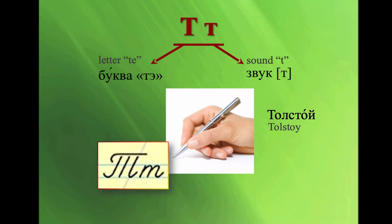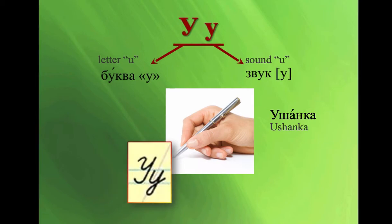Т. Т. Толстой. The author of Anna Karenina, War and Peace. У, У, Ушанка. It's a type of hat with ear flaps. Good for cold winters.